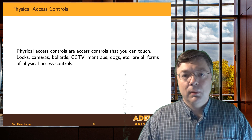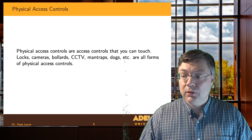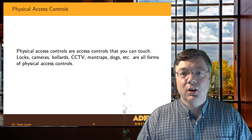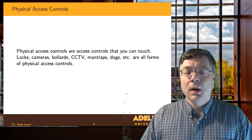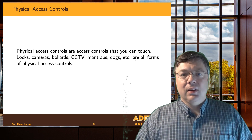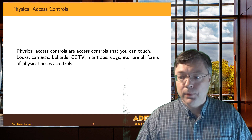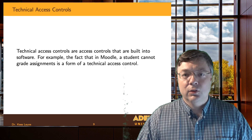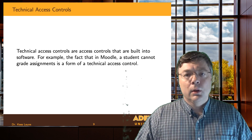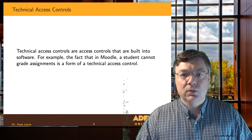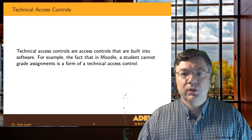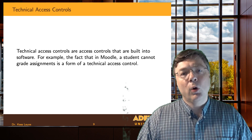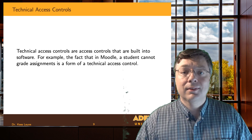Access controls come in many different forms. We have physical controls — things we can see and touch — whether those are doors and locks, cameras, lights, gates, guards, guard dogs, or landscape design; all of those guide access to a physical resource. We also use technical access controls — computer-based controls, software that enforces privileges through access control mechanisms. For example, the fact that you as a student cannot grade yourself, and that you can only see courses in Moodle that you are actually enrolled in — those are access control decisions made in software and are therefore technical access controls.